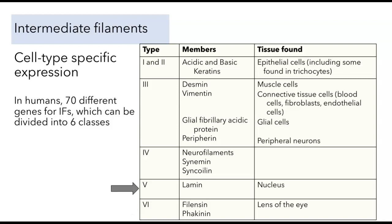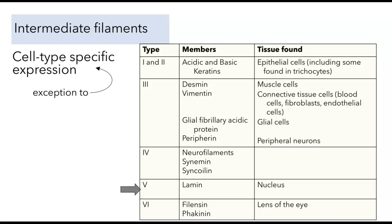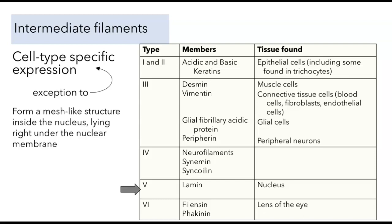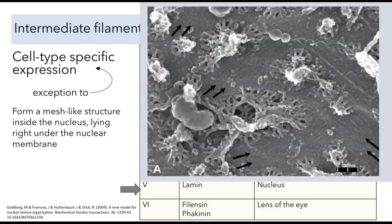The next group are the lamins, and this is the group that's going to be the exception to the rule of cell-type specific expression. We find lamins expressed in every cell in the human body — in fact, in every cell in any metazoan animal. Everything except for the most primitive animals like sponges — every multicellular animal will have lamins in the nucleus. They form a mesh-like structure inside the nucleus lying right under the nuclear membrane, and we can visualize that here.